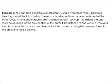After a photograph is taken, computers can unwrap the distorted image. Write an equation for the cross-section of the mirror if the distance to one vertex is three centimeters and the distance to the focus is four.